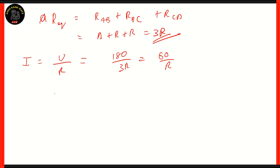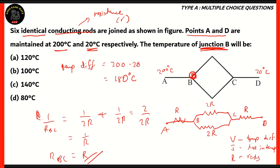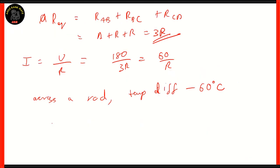What does it mean by I being 60/R? That means across a rod, the temperature difference will be 60°C. Now we need to find out the temperature at junction B. So we know that current flows one way, temperature also flows one way, so heat flows from higher temperature to lower temperature. So heat will flow from A to D. So therefore, the temperature at B can be calculated as the temperature at A minus the temperature difference across AB.